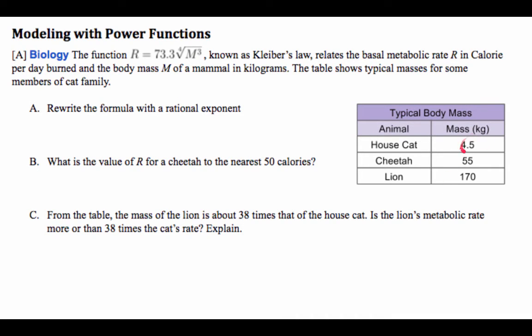So a house cat weighs usually about 4½ kilos, a cheetah about 55, and lions are massive at 170 kilograms. Just remember, 100 kilos is about 220 pounds.